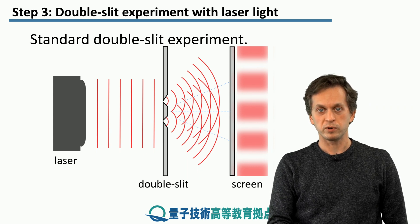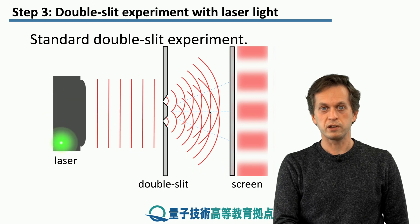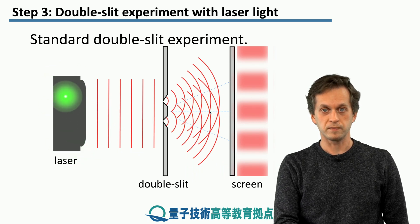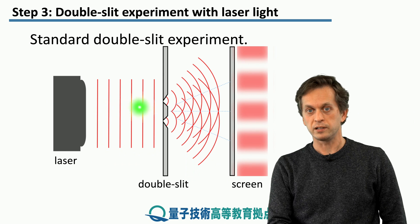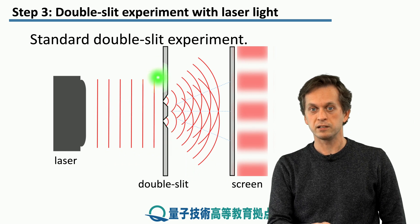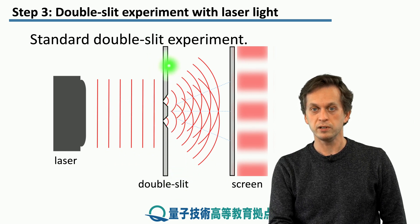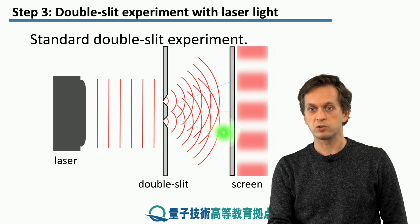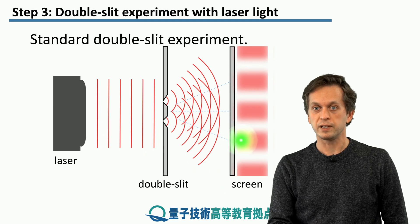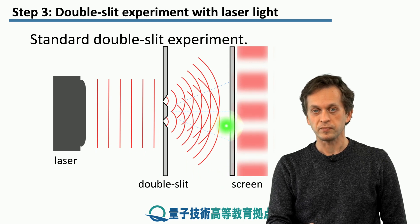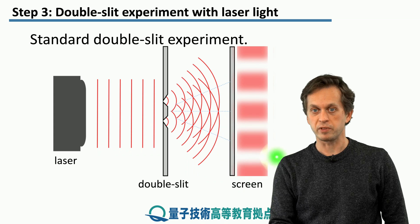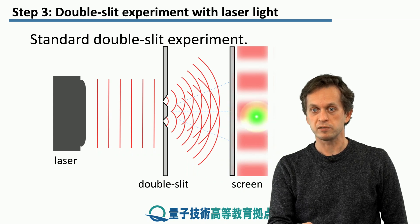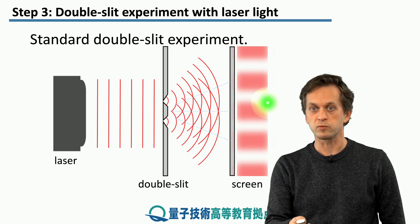In this experiment, we've got a source of coherent light — a laser. It's turned on and the laser light is incident on a screen where there are only two small double slits where the light can go through. Then it propagates towards another screen where we detect a pattern, which looks something like this: fringes of bright light and dark fringes where there is no light.